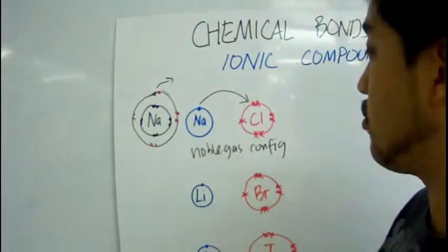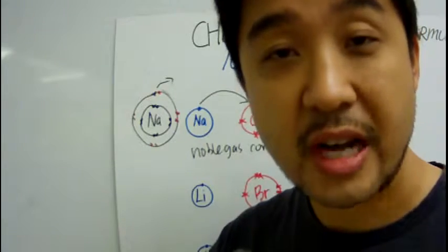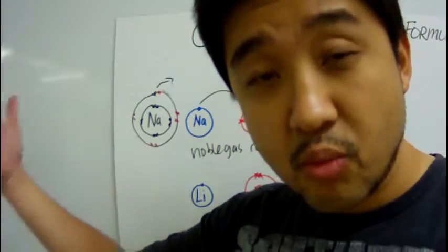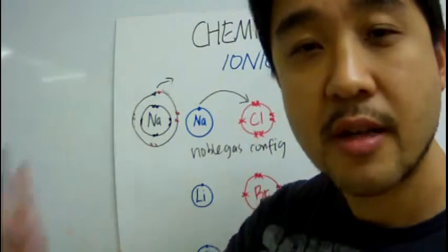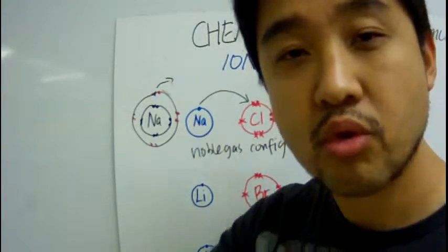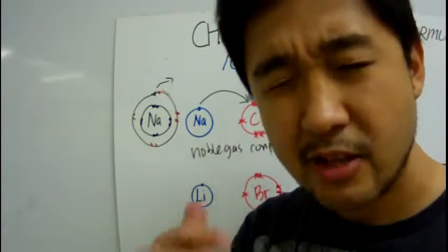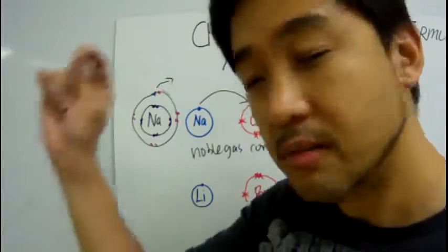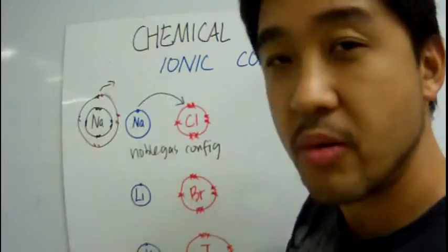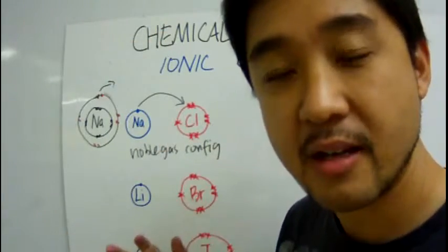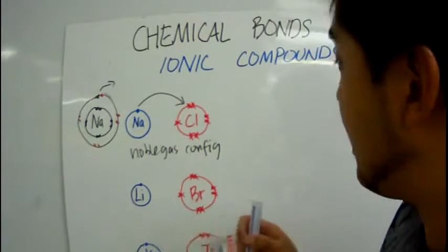So sodium loses that one electron to chlorine. Chlorine, on the other hand, has seven electrons on its outer shell and also wants to achieve a noble gas configuration. To do that, it can either gain one electron to have a full noble gas configuration, or lose all seven. The more energy efficient method is to gain that one electron, and this is exactly what happens when sodium and chlorine come together.